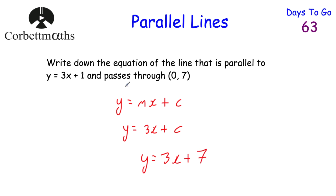So the equation of the line that's parallel to y equals 3x plus 1 and passes through that point is y equals 3x plus 7. It's got a gradient of 3 — the same gradient — and passes through 7 on the y-axis, so plus 7. And if you got that, well done.